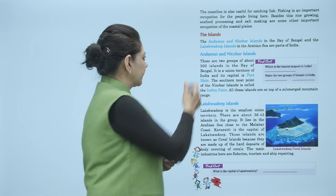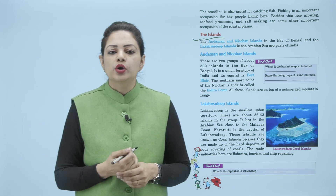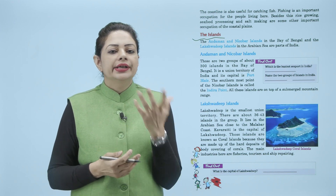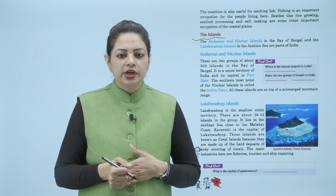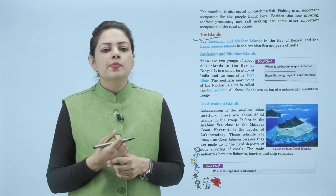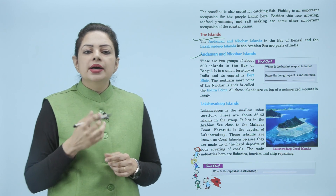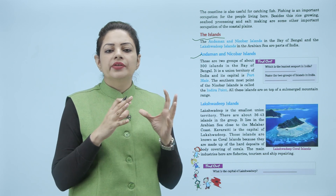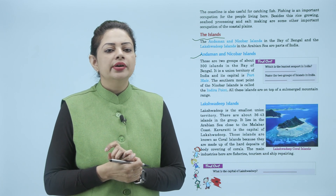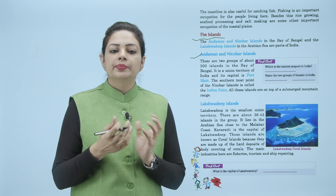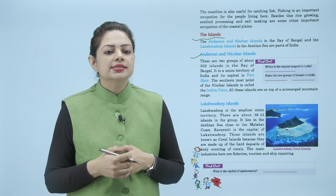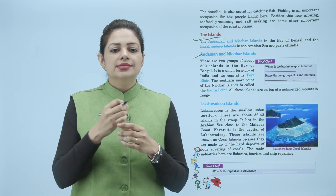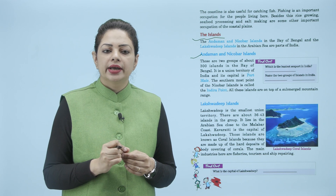Ab hum baat karte hain islands ki. The Andaman and Nicobar islands in the Bay of Bengal and the Lakshadweep islands in the Arabian Sea are parts of India. The southernmost point of the Nicobar island is called the Indra Point.